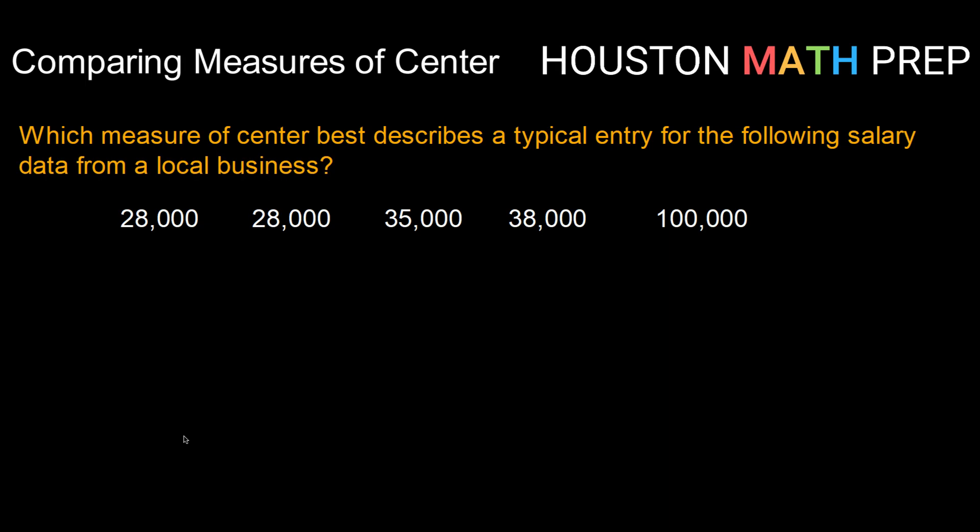So we're going to look at this example. Which measure of center best describes a typical entry for the following salary data from a local business? So here we have five salaries: $28,000, $28,000, $35,000, $38,000, and $100,000.